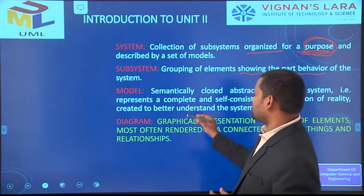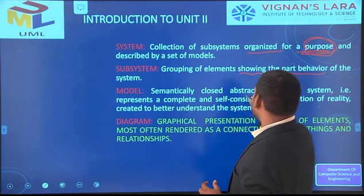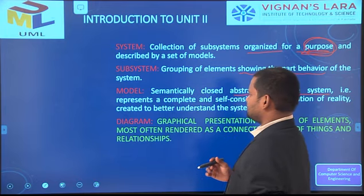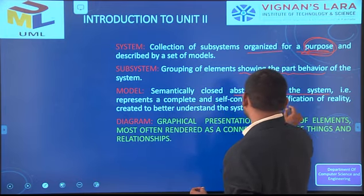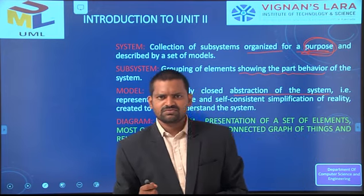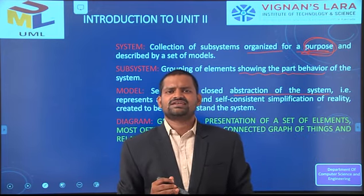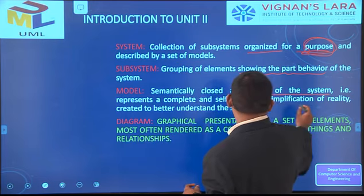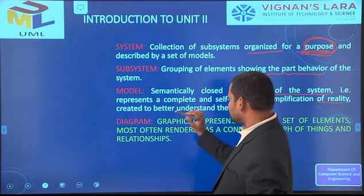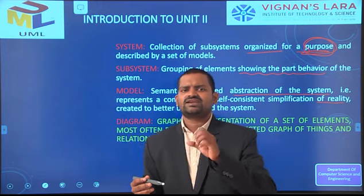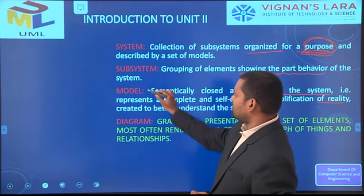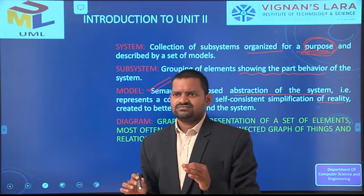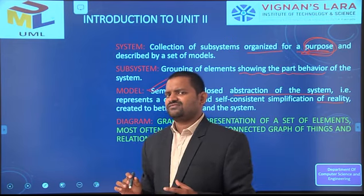What is a model? A model is a semantically closed abstraction of the system — that is, it represents a complete and self-consistent simplification of reality. A model can tell that a real world problem will be translated into a diagrammatical representation. A model is simply a blueprint of the real world problem.